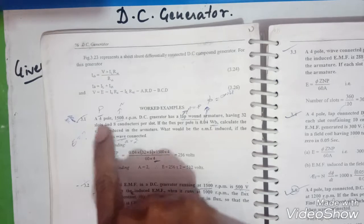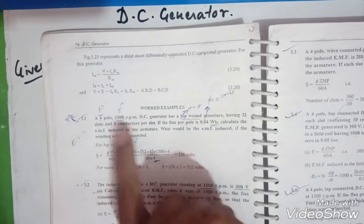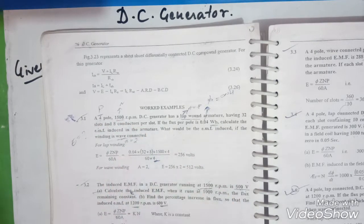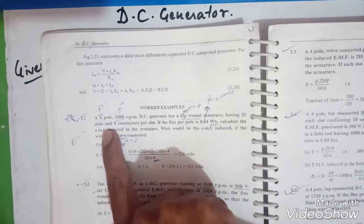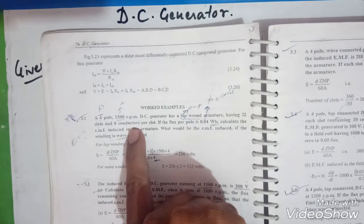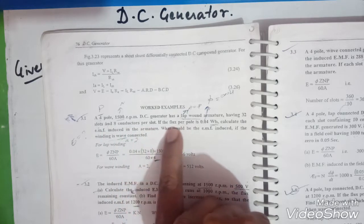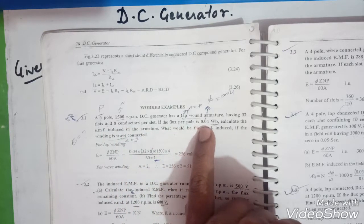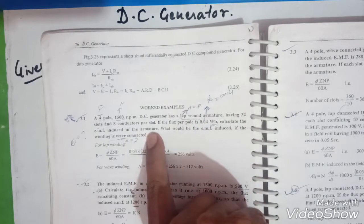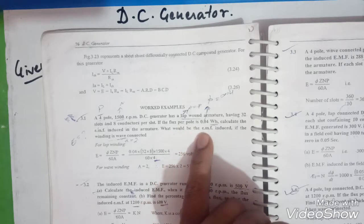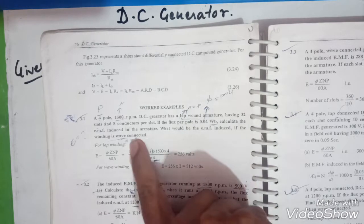A 4 pole 1500 rpm DC generator has a lap wound armature having 32 slots and 8 conductors per slot. If the flux per pole is 0.04 webers, calculate the EMF induced in the armature. What would be the EMF induced if the winding is wave connected?